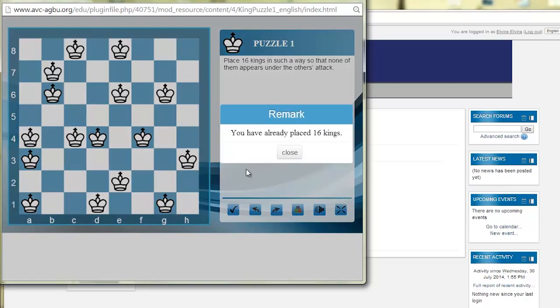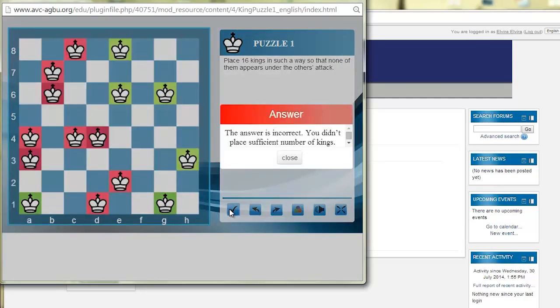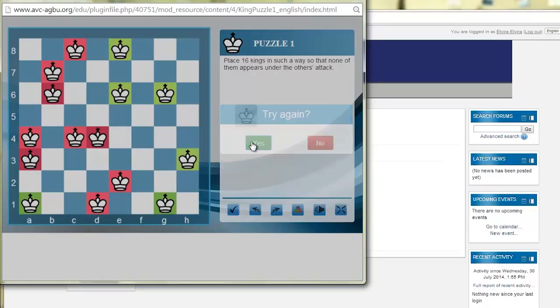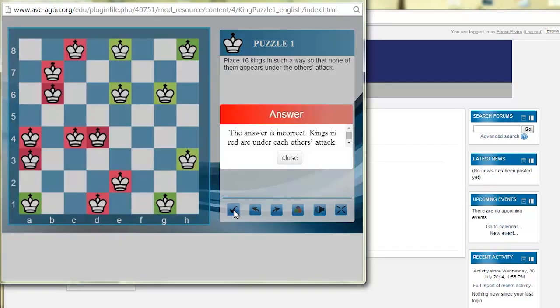You have already placed 16 kings. The answer is incorrect. You didn't place sufficient number of kings. The answer is incorrect. Kings in red are under each other's attack.